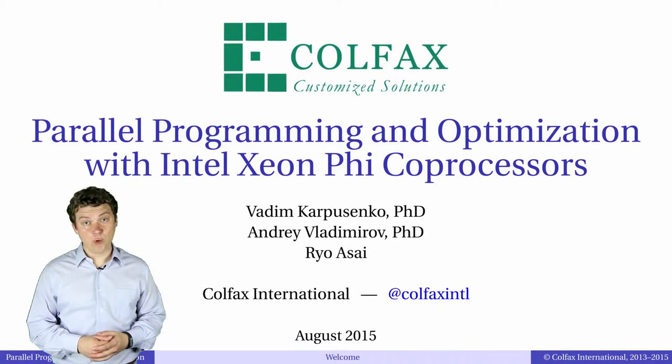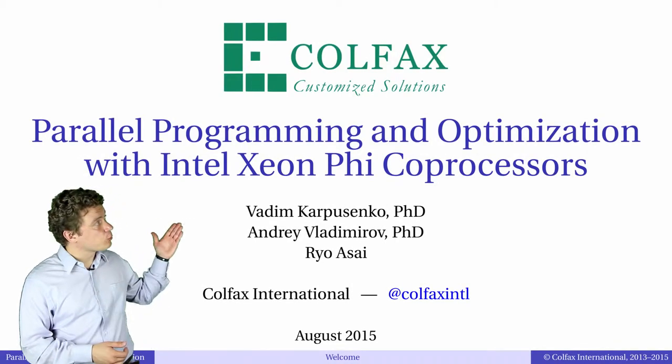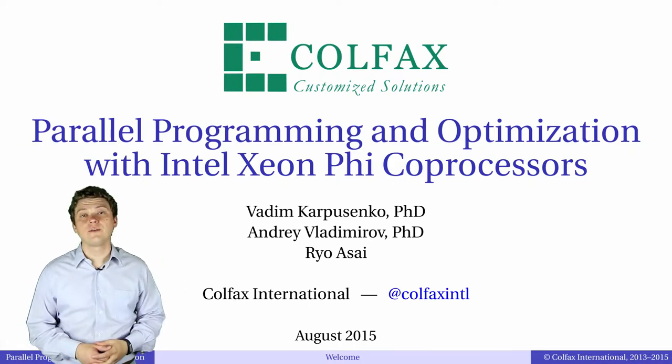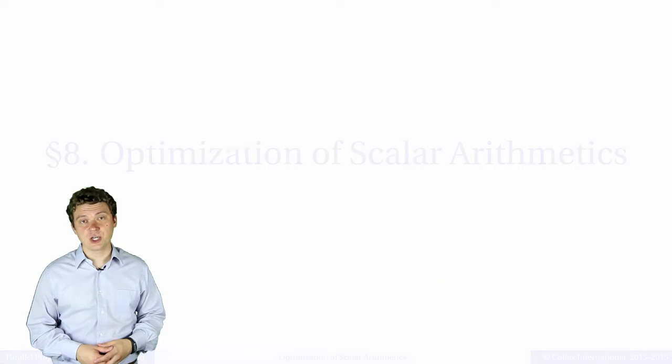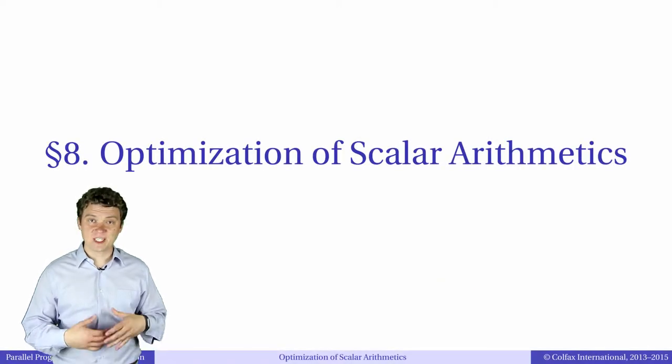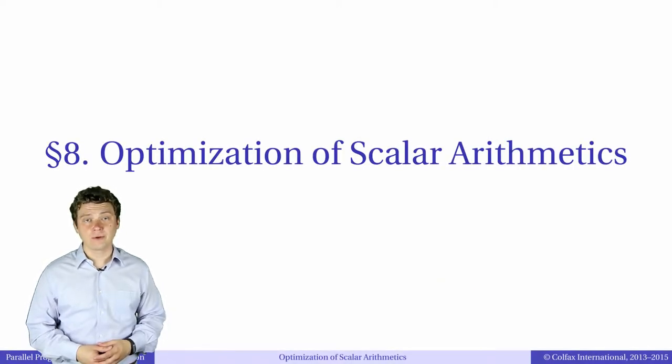Welcome to episode 5.2 of our video course Parallel Programming and Optimization with Intel Xeon Phi Processors. In this episode, Scalar Tuning and General Optimization, we'll talk about optimization of scalar arithmetics and compiler-friendly practices.